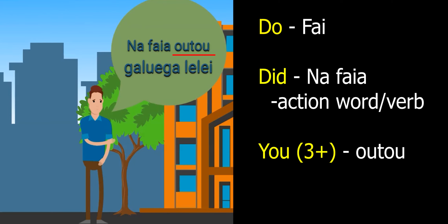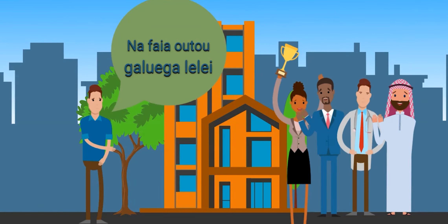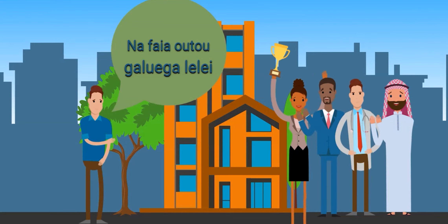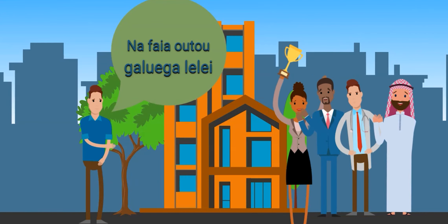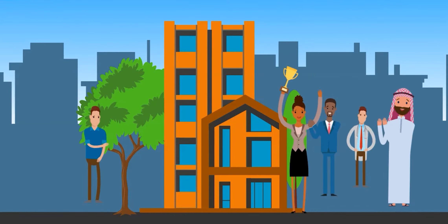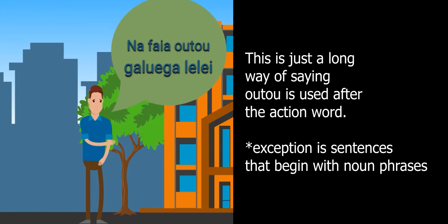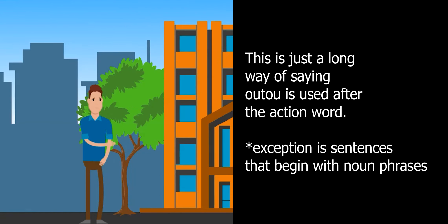Both ways, the verb do — na faya — is the past tense of do because of the na, so na faya makes do into did. You'll learn more about that in the tense marker section. Since did is the action word and it comes before the pronoun, we use oko or oto. So: na faya ngaluenga lele oto, or na faya oto ngaluenga lele.